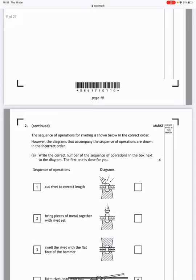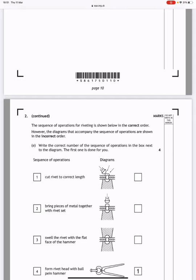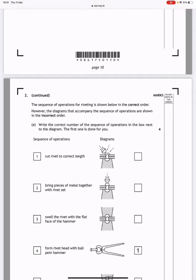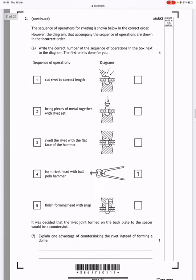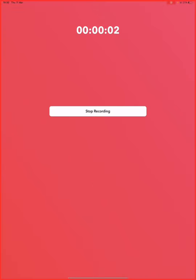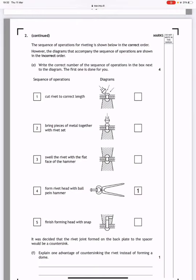The sequence of operations for riveting is shown below in the correct order. However, the diagrams that accompany the sequence of operations are shown in the incorrect order. Write the correct number of the sequence of operations in the box next to the diagram. In this question it says the sequence of operations for riveting is shown below in the correct order. However, the diagrams accompanying the sequence of operations are shown in the incorrect order.